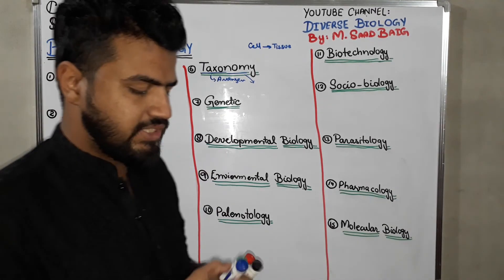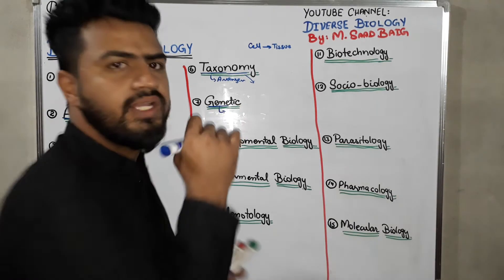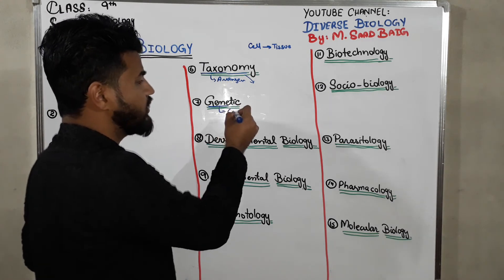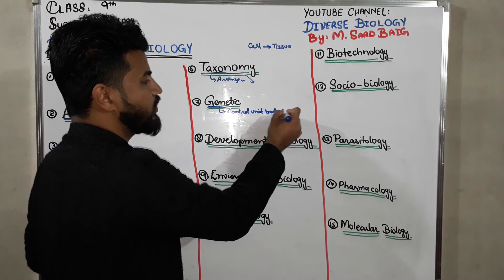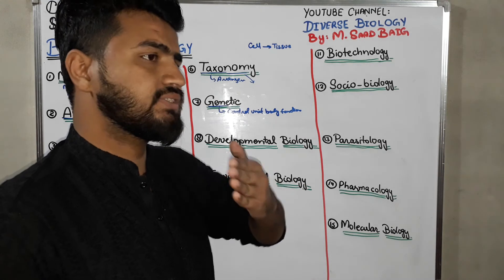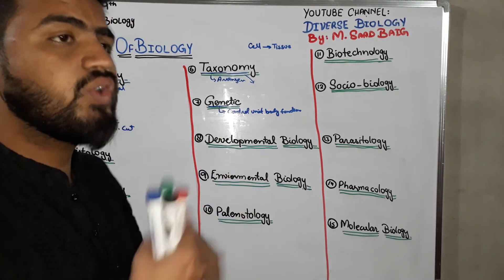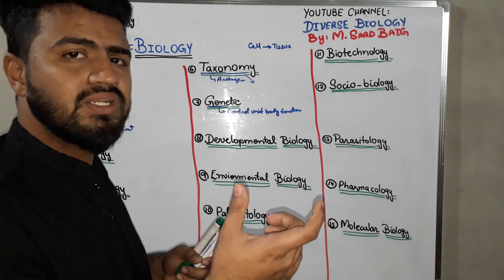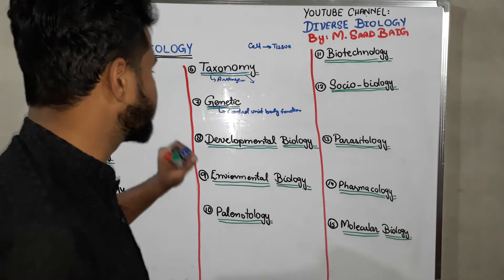Next we discuss genetics. In genetics we talk about genes — genes are the controlling unit of any body function. The characters that come from parents to offspring are called inheritance. The basic unit of inheritance is the gene. So simply, the study of characteristics or inheritance material which are transferred from parents to offspring is known as genetics.